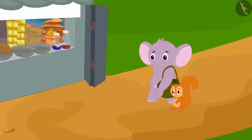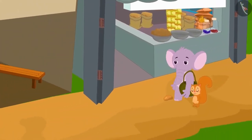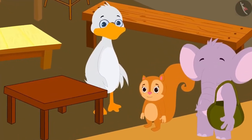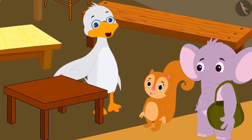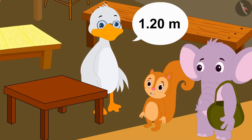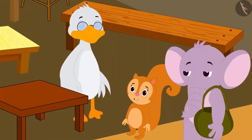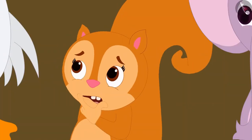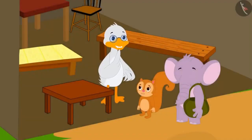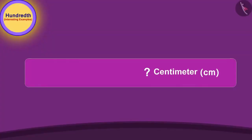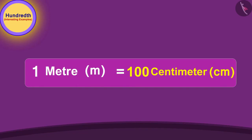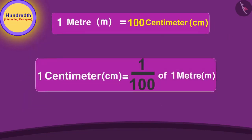Appu and Chanda have come to the market to buy tables for their respective homes. Chanda liked a table and asked the uncle how long it is. The uncle says: This table is 1.20 meters long. Chanda doesn't understand. The uncle explains: How many centimeters is 1 meter? 100 centimeters! So 1 centimeter is the 100th part of a meter. He explains how to write the hundredth part using a decimal point.